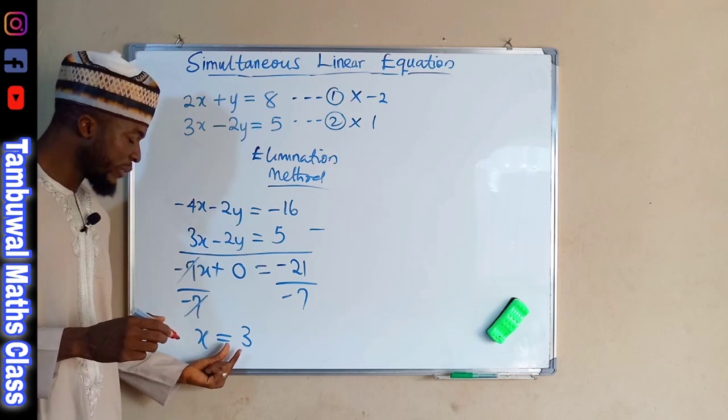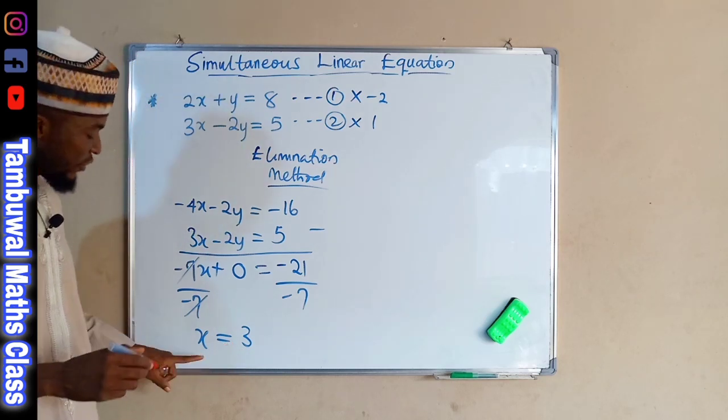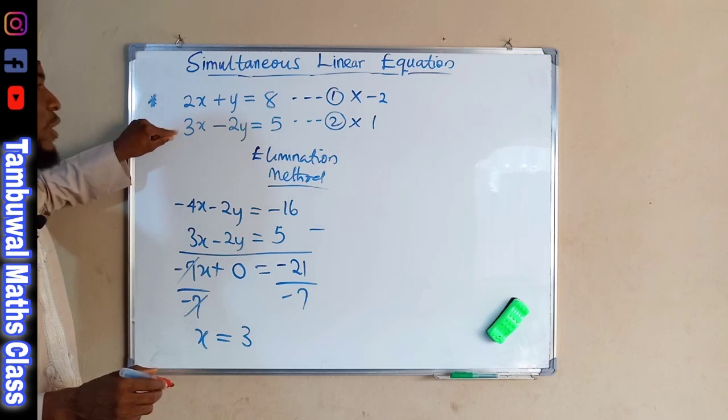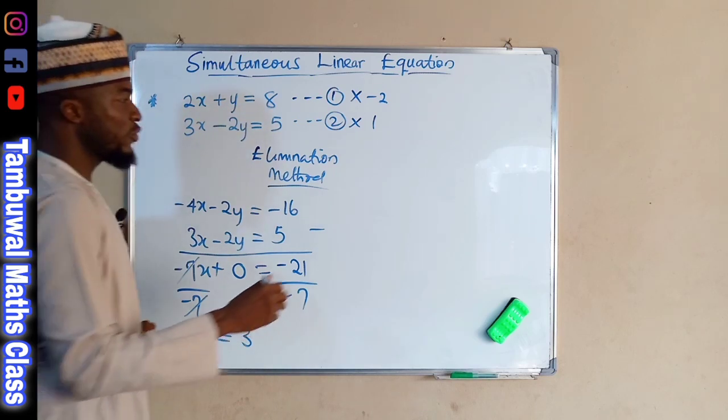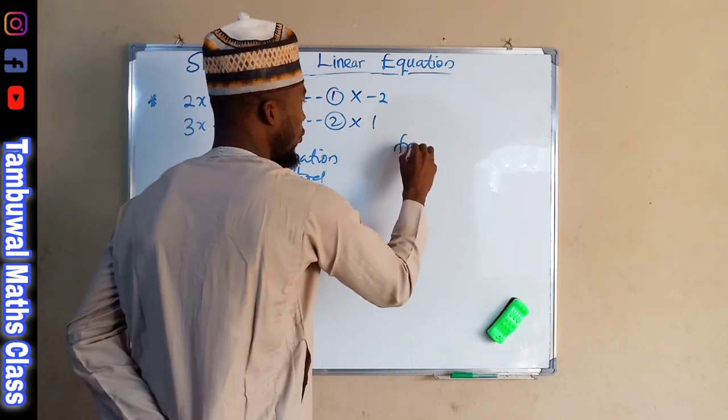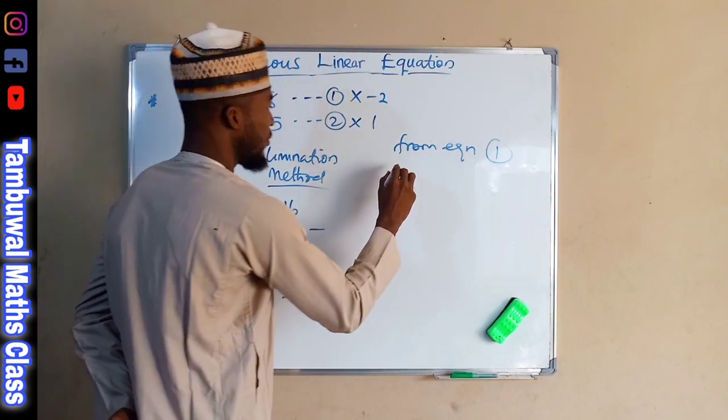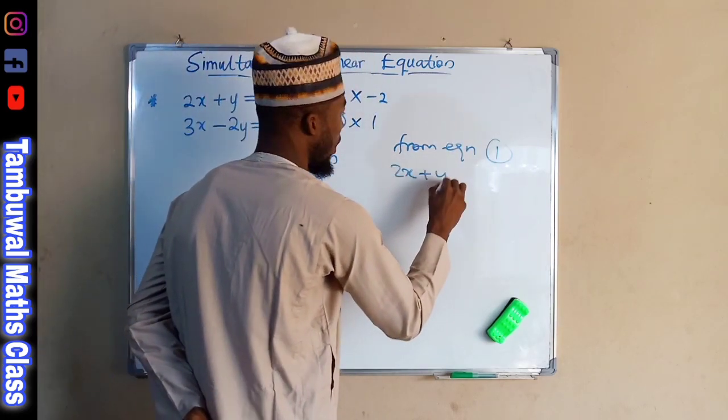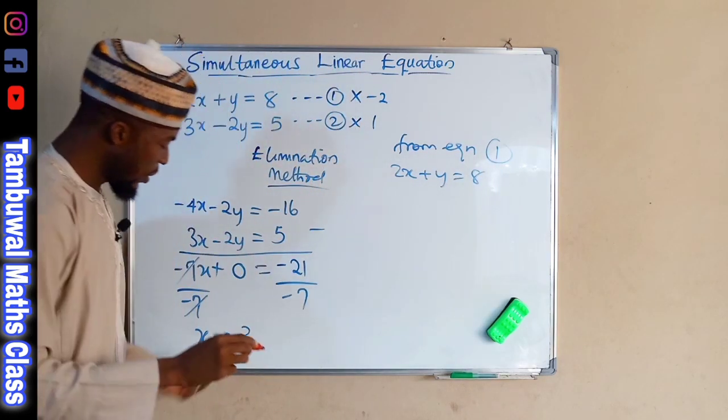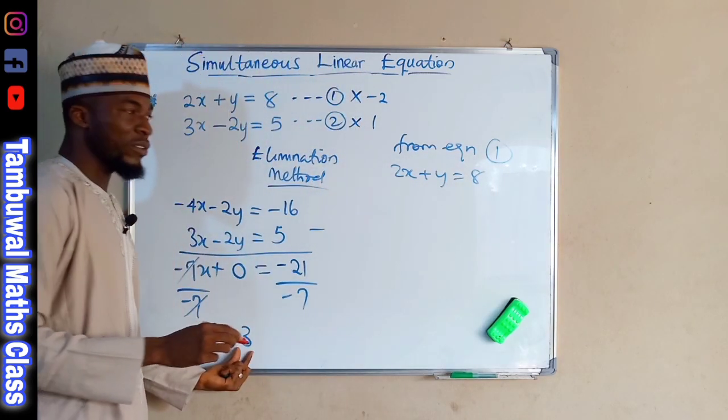So, now to obtain the corresponding value of Y, we are going to substitute this value of X in either equation 1 or equation 2. Now, let us use equation 1. From equation 1, we can see that 2X plus Y is equal to 8. Our X is now equal to 3.